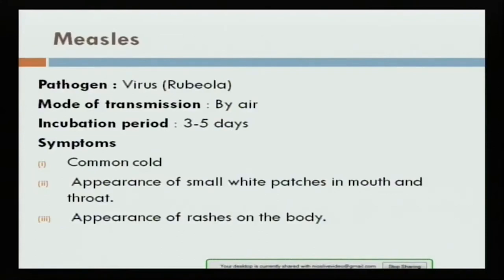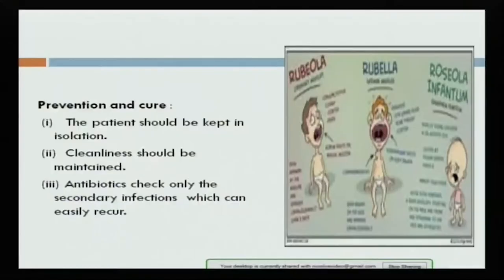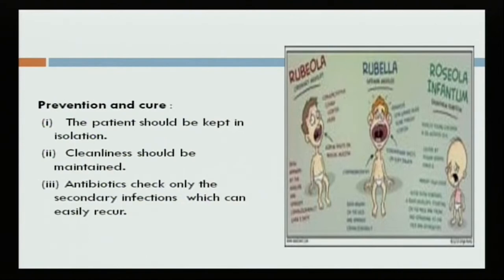Measles' pathogen is Rubella virus. Its mode of transmission is by air. Incubation period is 3 to 5 days. Symptoms include common cold, small white patches in the mouth and throat, and appearance of rashes on the body. Treatment includes keeping the patient in isolation. Cleanliness is a must to maintain prevention and cure, along with the use of antibiotics.